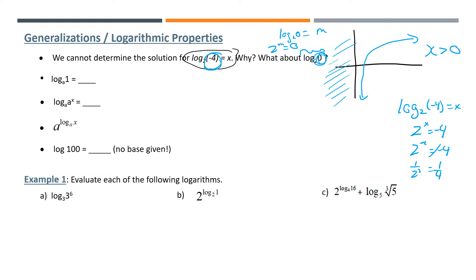The next bullet is log base a of 1 — a generalization we're going to make. Log base a of 1 equals what? Converting to exponential form: a to the power of something equals 1. That something can only always be 0. No matter what a is — it doesn't matter if a is 12 — regardless of what your base is, if you have a 1 for your input, the answer has to be 0.